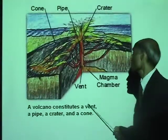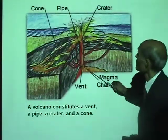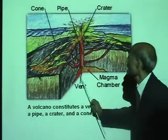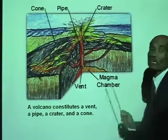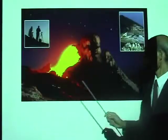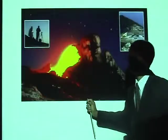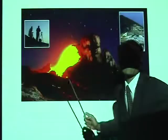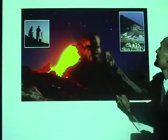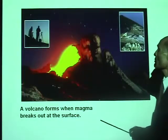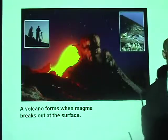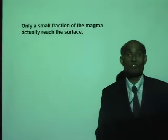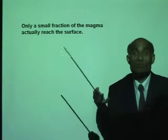A volcano constitutes a vent, a pipe, a crater, and finally a cone. You can see the lava really spewing out and forming that cone-shaped structure. A volcano forms when magma breaks out at the surface. Only a small fraction of the magma actually reaches the surface.